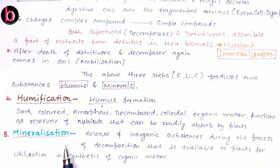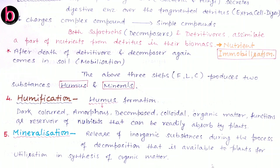The fifth step is mineralization — the release of inorganic substances that occurs during decomposition, which are available to plants for synthesis of their own organic matter. So these are the five steps of decomposition: fragmentation, leaching, catabolism, humification, and mineralization. After these five steps, there is complete degradation of detritus, which is properly mixed into the ecosystem for further cycling.